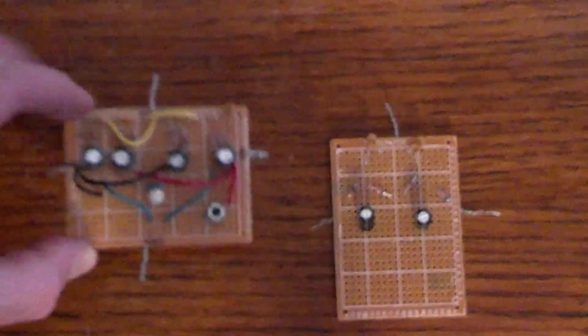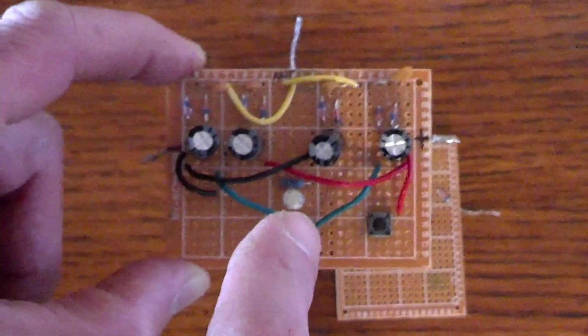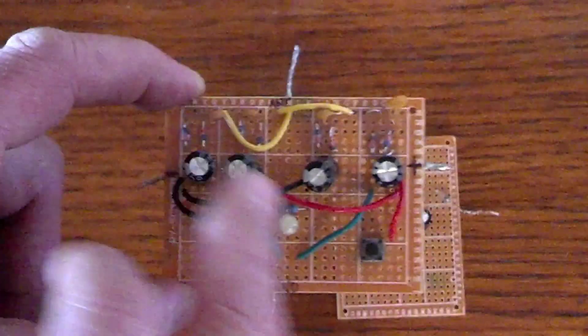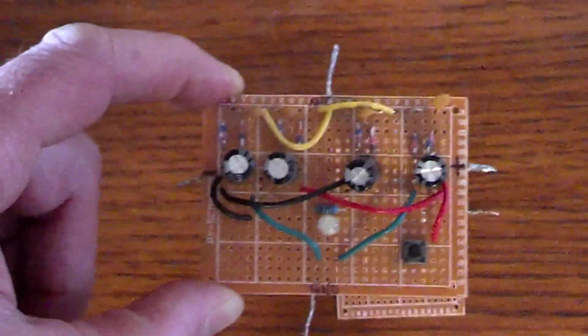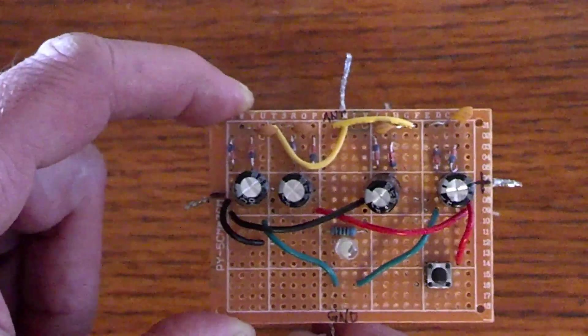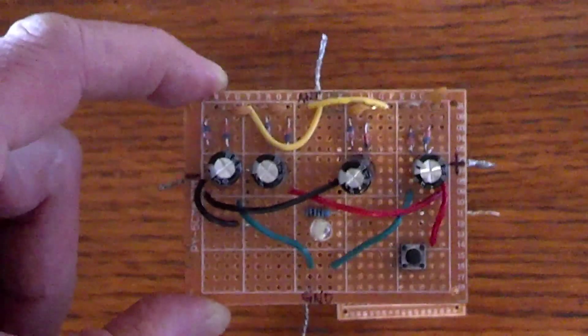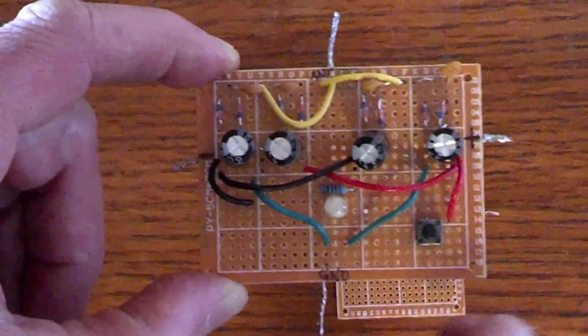This one here is basically just two of those. There's one on this side and one on this side. And they're both connected here to this connection for the antenna. And then we got the ground down here and also have the plus and minus out.